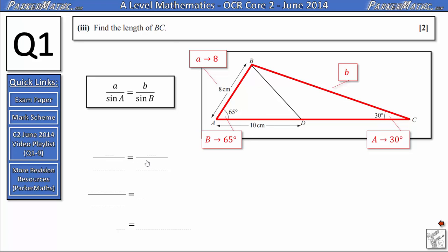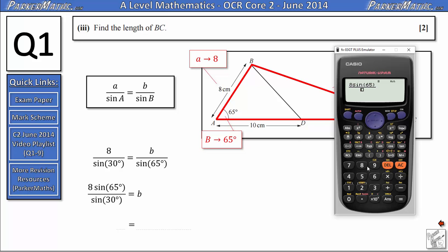Substituting the values into our formula A is 8 and angle A is 30 degrees so we get 8 over sine 30 degrees equals B over sine 65 degrees. To get B on its own we need to multiply both sides by sine 65 and that gives us 8 sine 65 over sine 30 equals B. And that gives us 14.5 if we round to three significant figures.